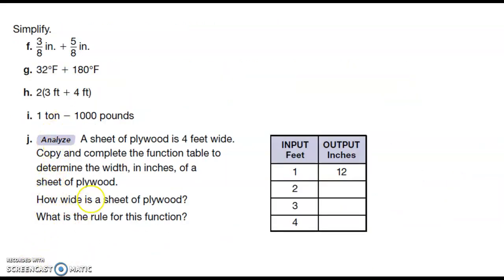We've got some fractions here. Simplify. So three eighths of an inch plus five eighths. So three plus five is eight over eight because our denominator doesn't change, which is one inch.